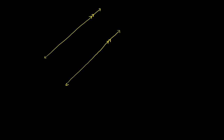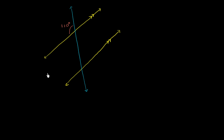And then let me draw a transversal here — this is also a line. Now let's say that we know that this angle right over here is 110 degrees. What other angles can we figure out here?